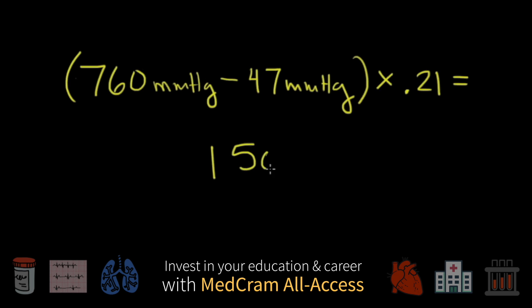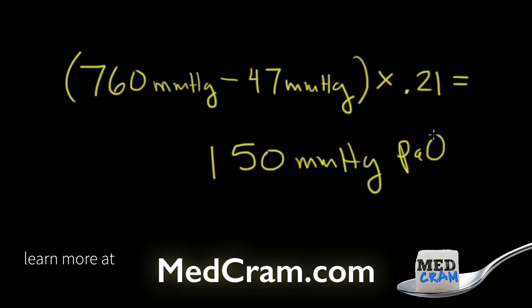Let me give you an example. So at sea level, we've got 760 millimeters of mercury. Now, as soon as you inspire this air at sea level into your lungs, it becomes humidified. And this is kind of a red herring we're throwing into this, but you should know that the saturated vapor pressure is about 47 millimeters of mercury. And so right off the bat, 760 minus 47 times 0.21 is equal to 150 millimeters of mercury.